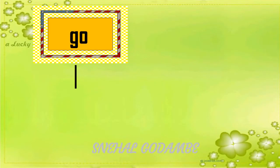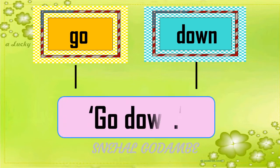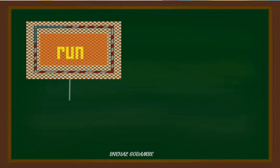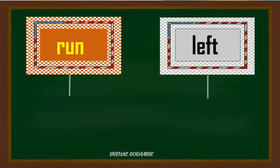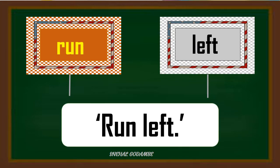Choose one more flashcard. Go from basket number one and down from basket number two. So our sentence is go down. Then next: run from the first basket, left from the second basket. So the phrase is run left.